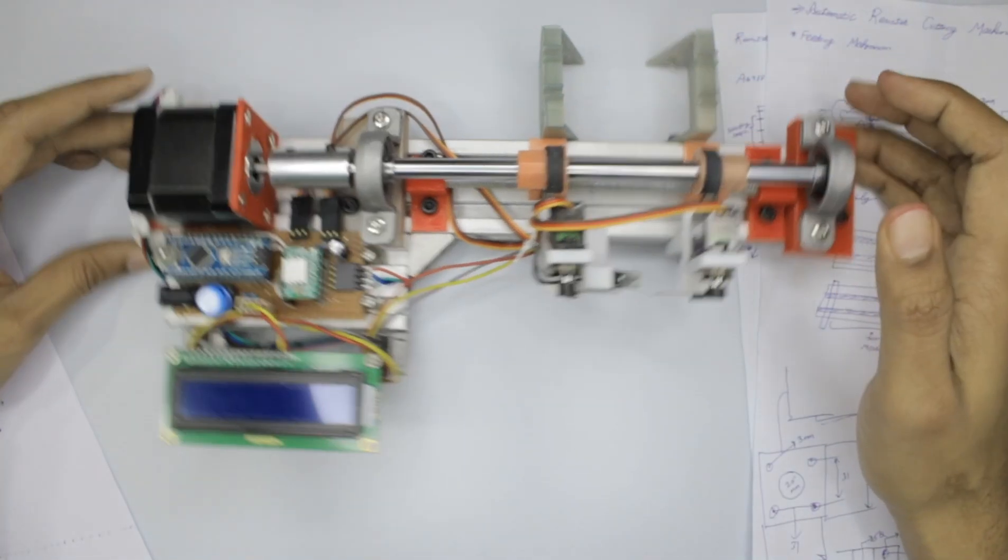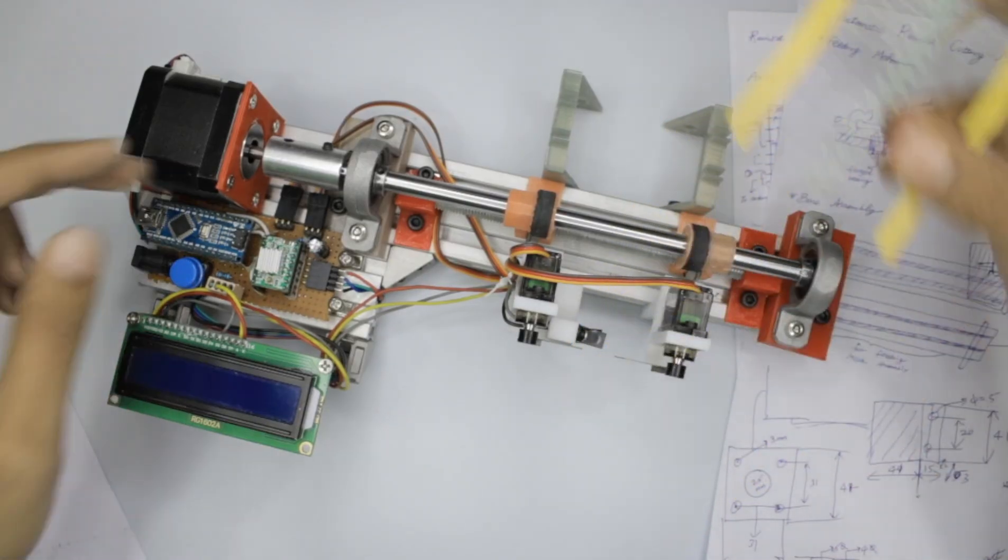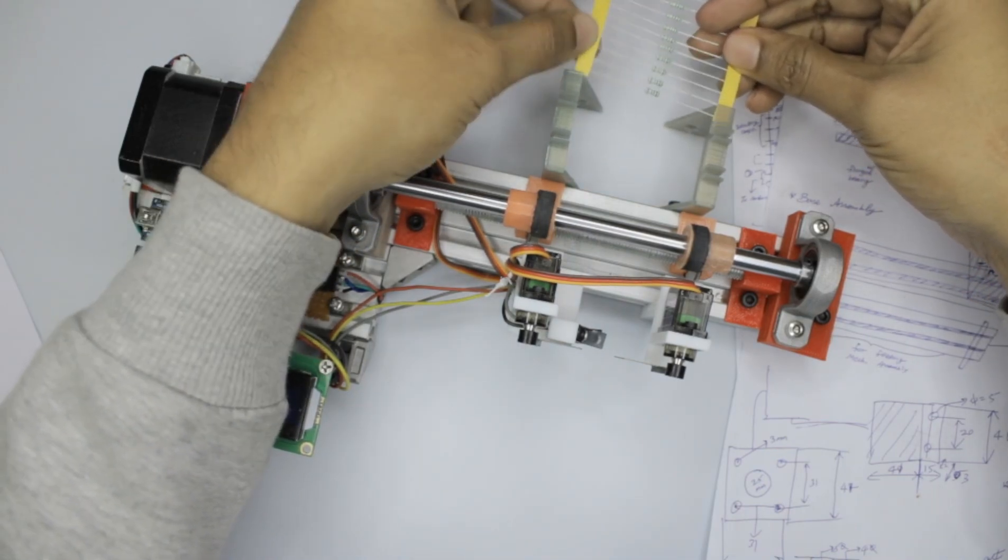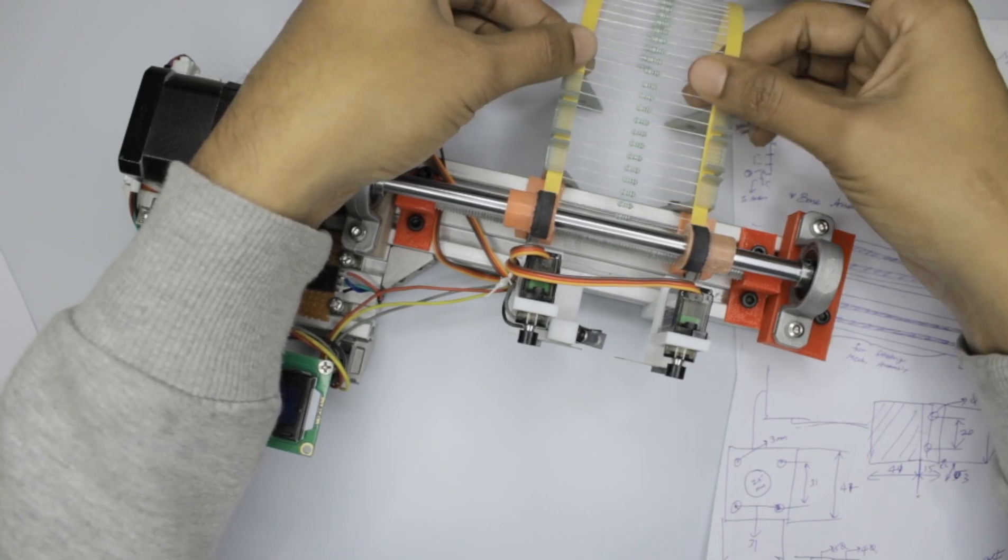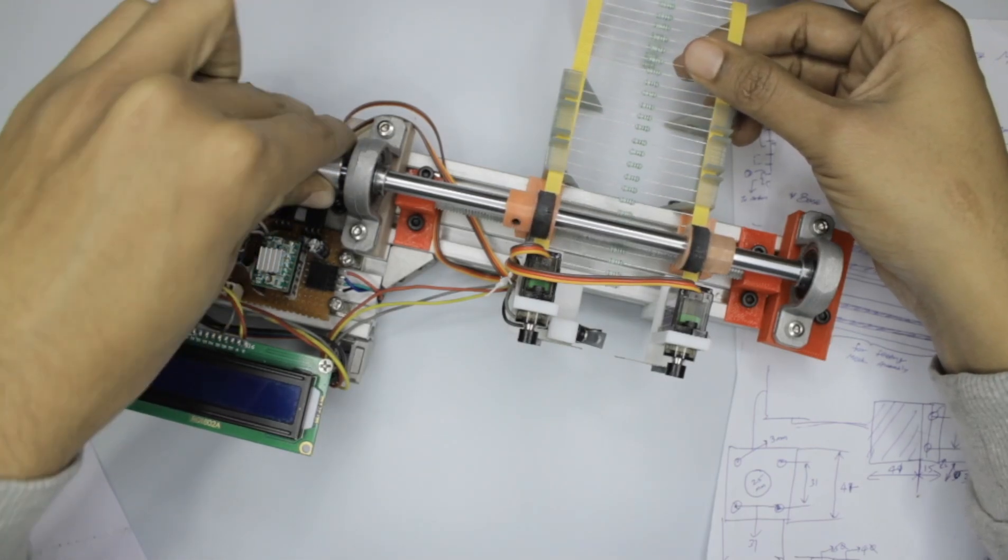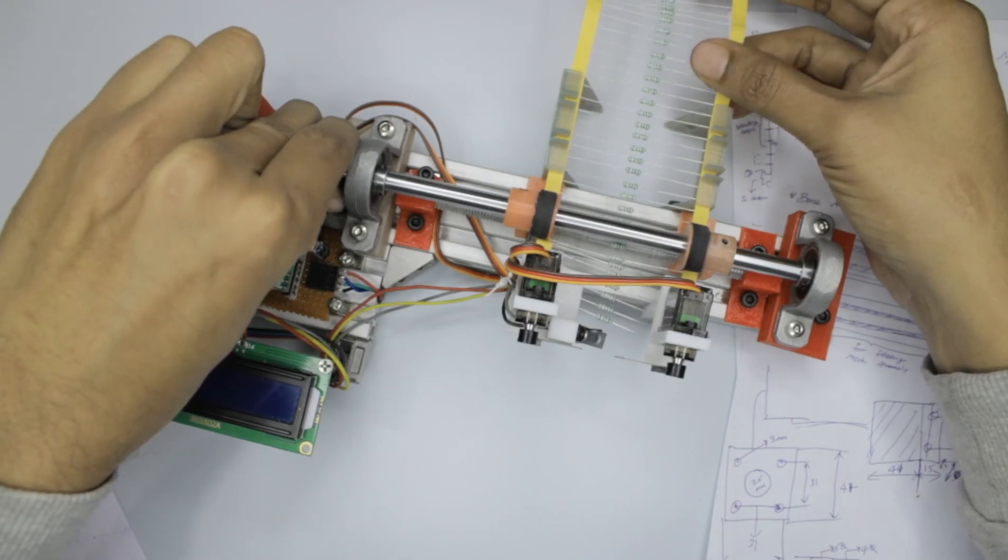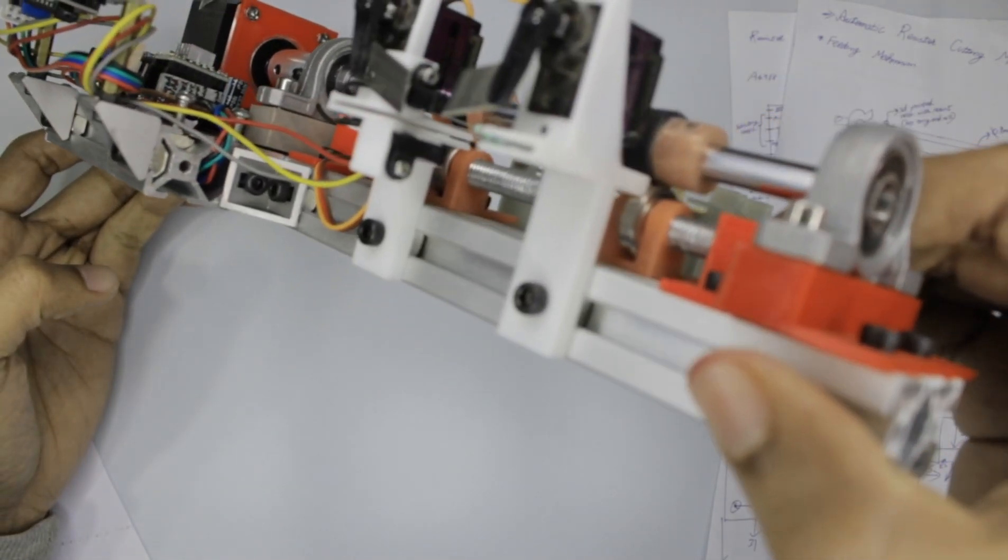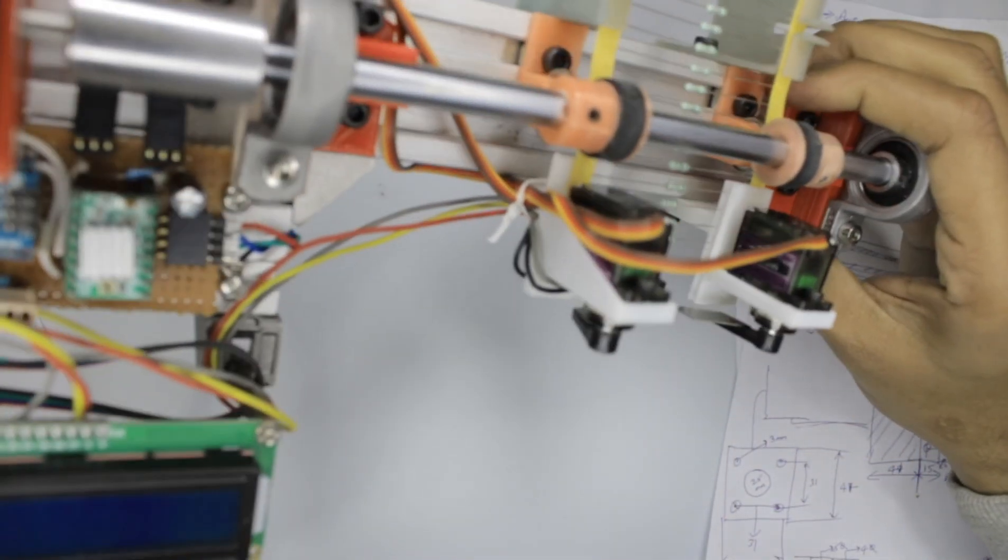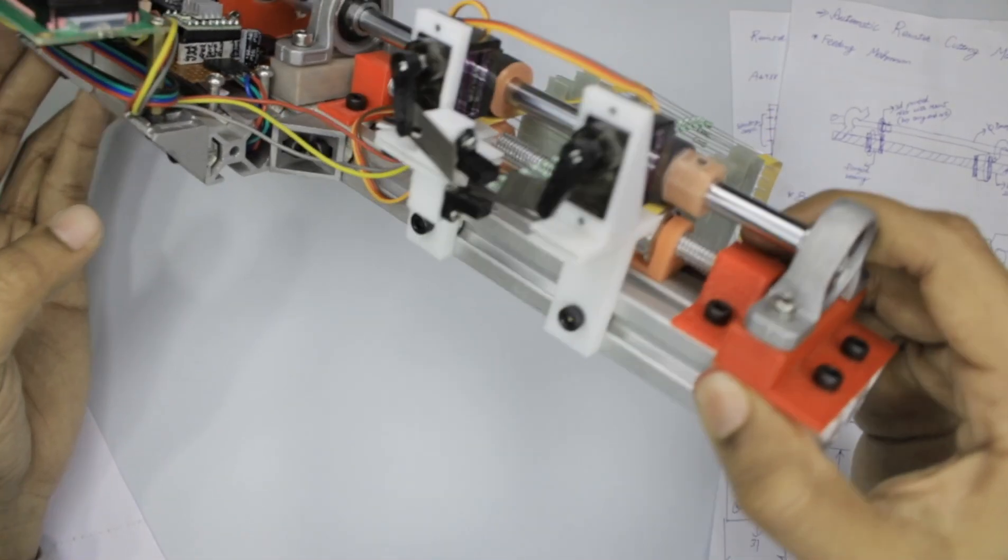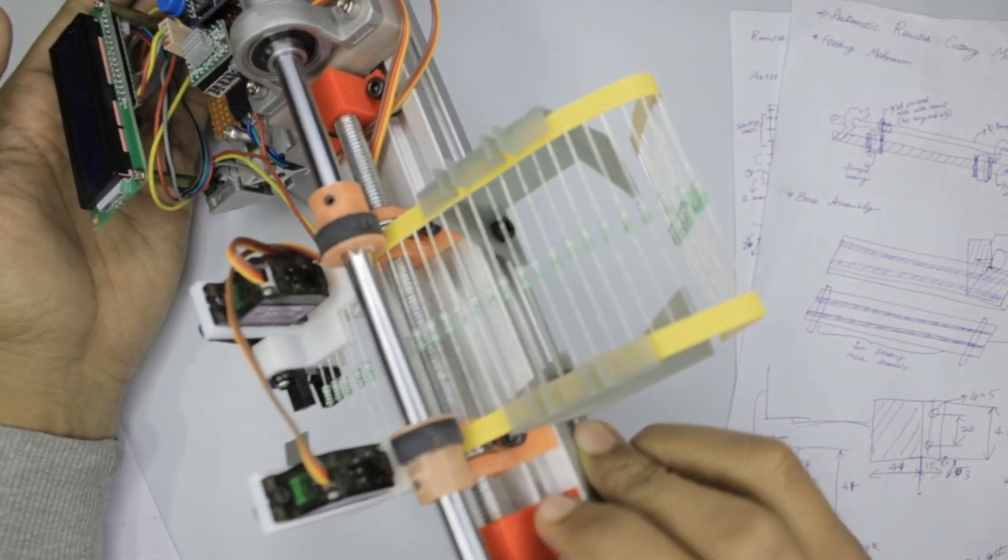Let me take a small resistor strip and show you how it passes through this entire thing. Here is the sample resistor strip - it goes into our machine from here. We just feed it inside like this and once it reaches here we can manually rotate this. This is how the feeding happens - it enters into the chopping area.